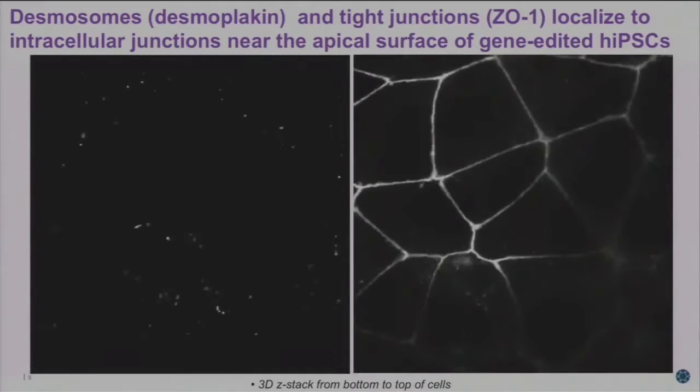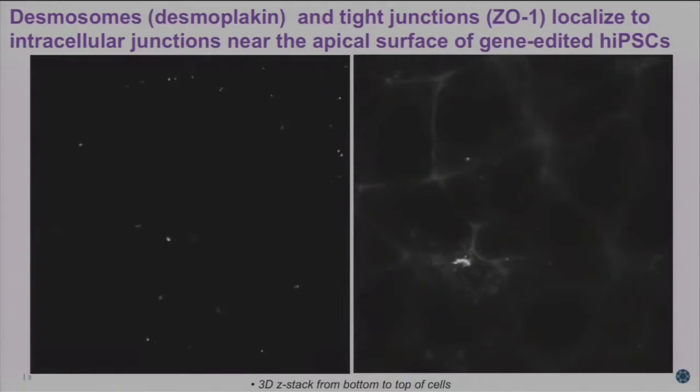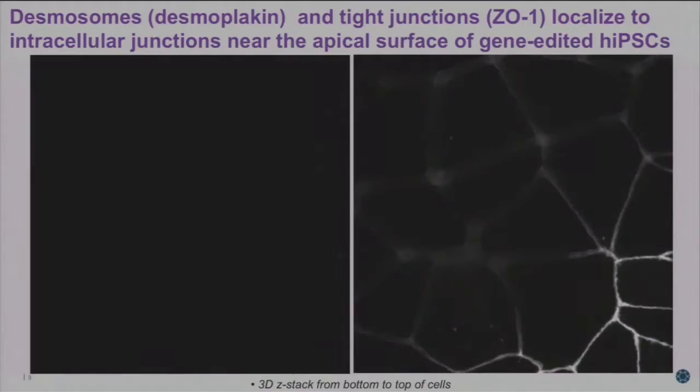All of a sudden you're going to start seeing these little dots, which are the desmosomes labeled by desmoplacin. They appear right at the cell-cell junctions near the apical surface of the cell. Here you can see a tight junction protein, ZO-1, doing the same thing. You can also notice how incredibly clear our signal is because we don't have any other protein in the cell other than the endogenously tagged protein.